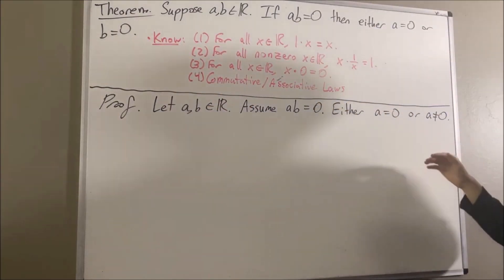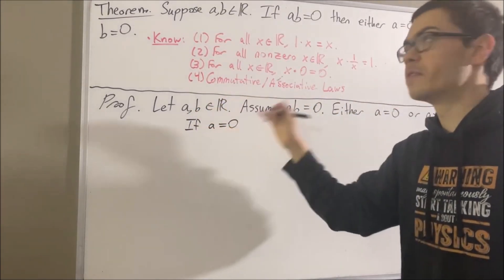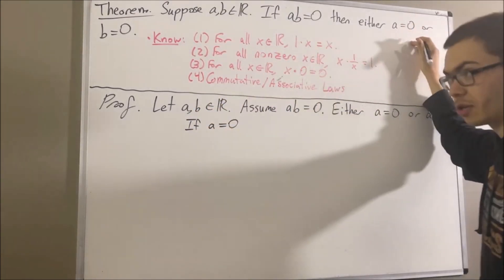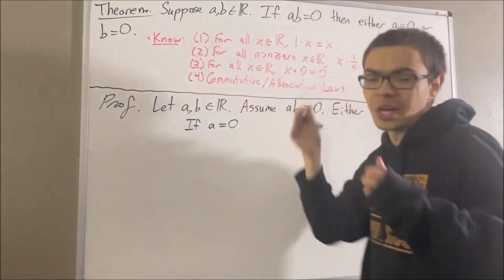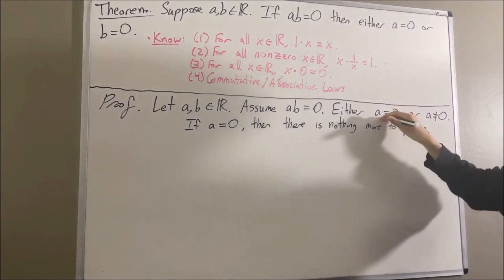So let's start with the first case where A is equal to 0. Now, if A is equal to 0, then either A is equal to 0 or B is equal to 0. So there's nothing more to prove. So that completes this case.